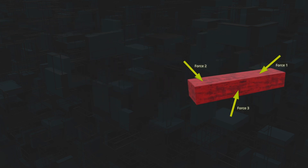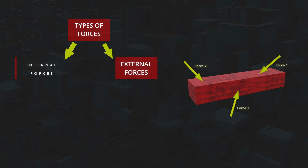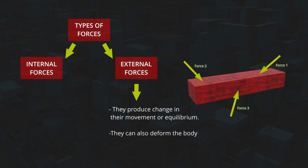In the study of bodies, we differentiate between two types of forces: external and internal. External forces originate outside the rigid body and act upon it. They can cause changes in its motion or equilibrium, either through translation or rotation.